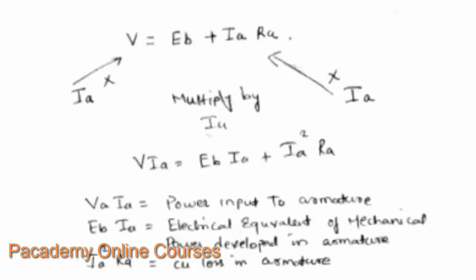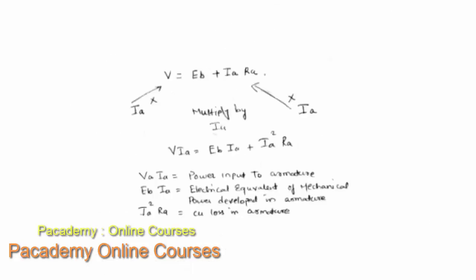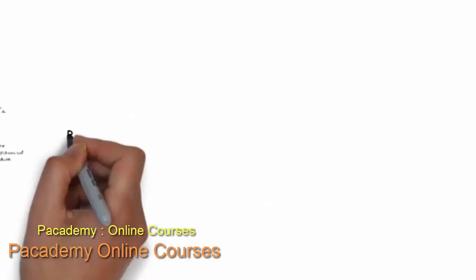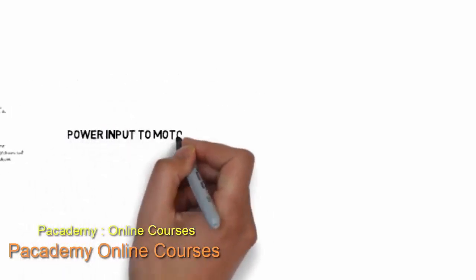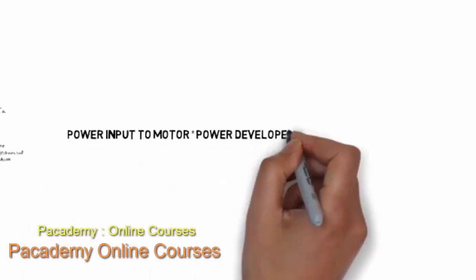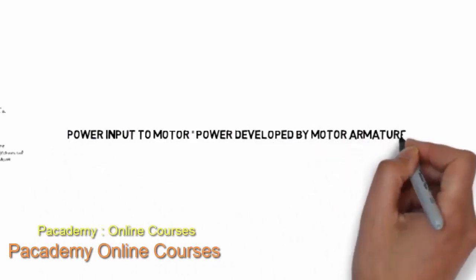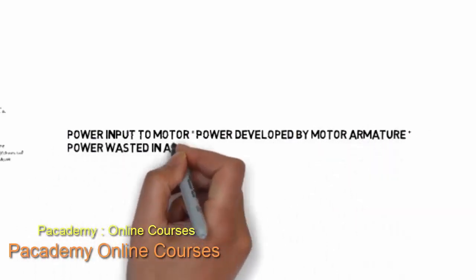I_A is the current drawn by the armature. E_B·I_A — that is back EMF into armature current — is the electrical equivalent of the mechanical power developed by the armature, which is the mechanical output of the motor expressed in electrical form. I_A²·R_A is the copper loss occurring in the armature windings of the motor.